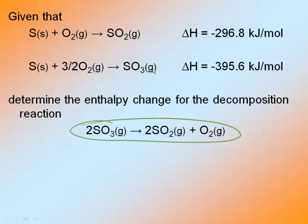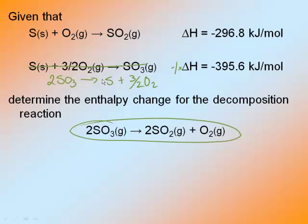Step one: make sure everything's on the correct side. I need SO3s on the left, but SO3s are on the right. In order to get things on the opposite side, I flip them. Whatever I do to my reaction, I must do to my delta H as well, so I multiply by negative 1. My SO2s need to be on the right — they are. I need to make sure I have the correct number of everything: I need two SO3s but I only have one, so I multiply everything in this reaction by two. When I multiply three-halves by two, I get three. This ends up multiplied by negative two.